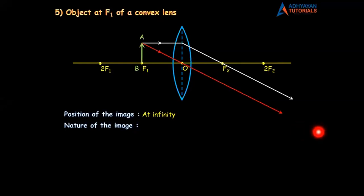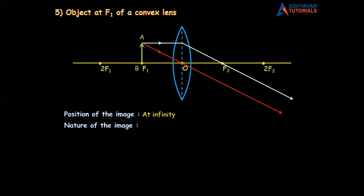Now let us decide if it is big or small. Suppose this is a point on infinity — you can see a red dot where you get the image. Now if you get the image here, it will be such a big image. Think children — at infinity, the image will be very large. And that's why the image is highly magnified. So the nature of the image is real, inverted, and highly magnified.